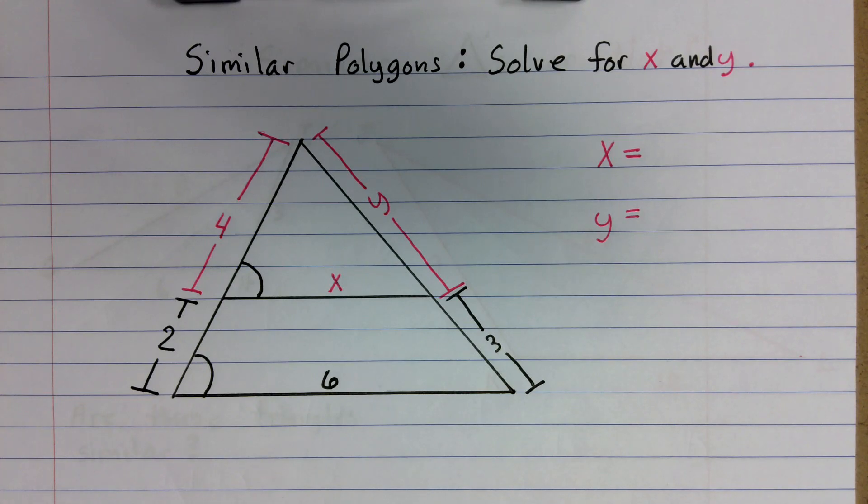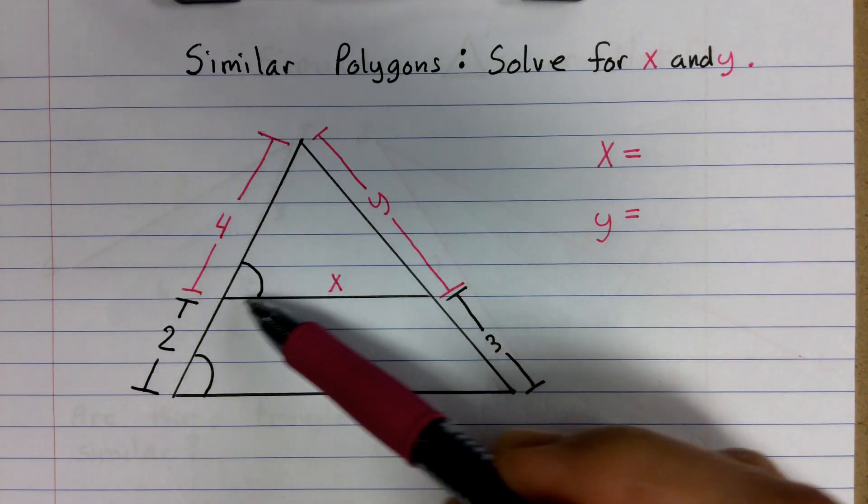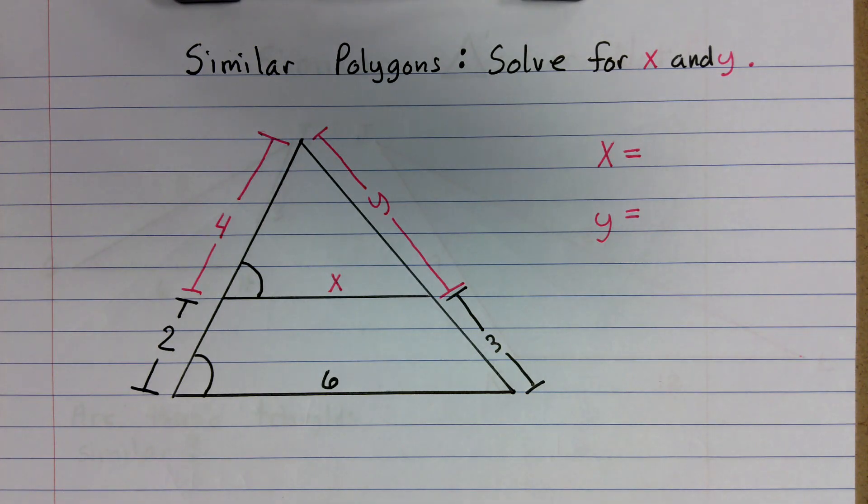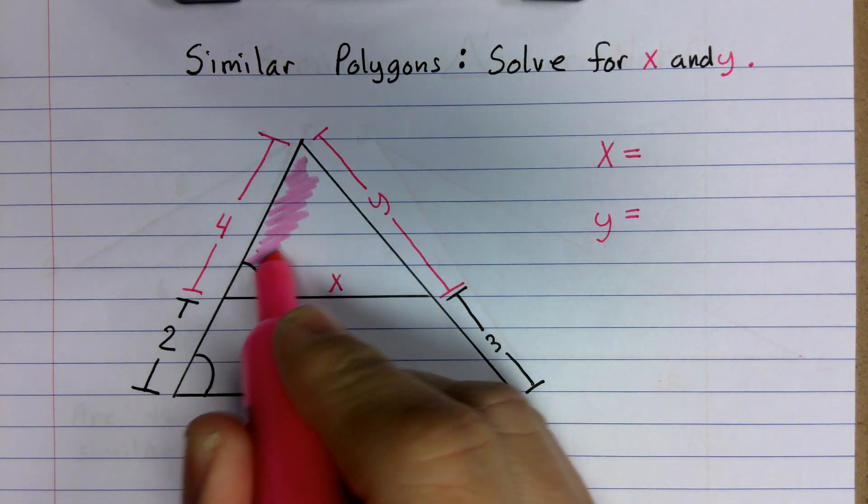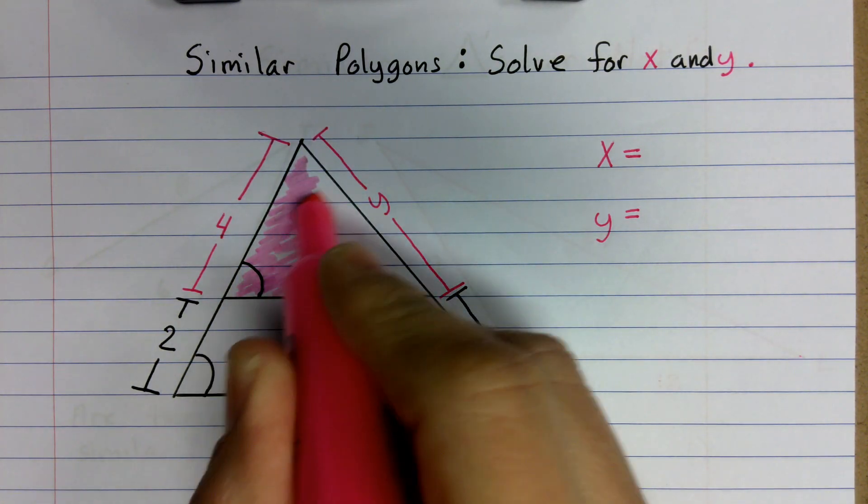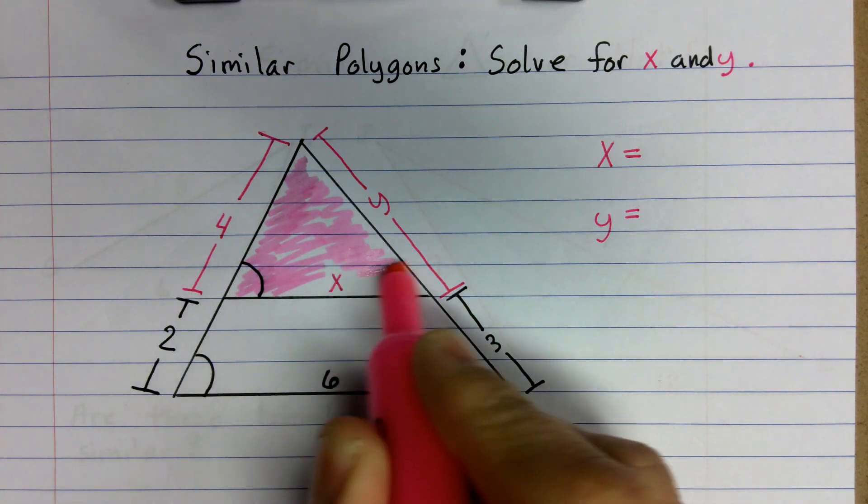Once again, we have two similar polygons. Notice that one of them is sitting inside of another. In other words, this one right here, I'm going to highlight it pink. This is inside of another triangle that's similar.